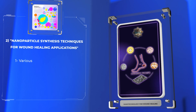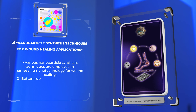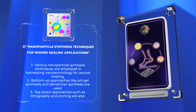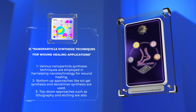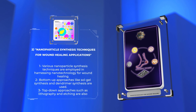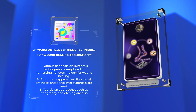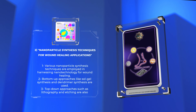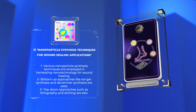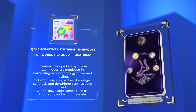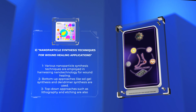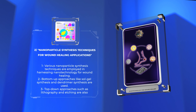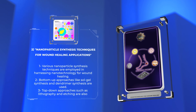To harness the potential of nanotechnology in wound healing, various nanoparticle synthesis techniques are employed. These techniques include bottom-up approaches like sol-gel synthesis, dendromer synthesis, and template synthesis, as well as top-down approaches such as lithography and etching. Each technique offers unique advantages and can be tailored to produce nanoparticles with specific characteristics suitable for wound healing applications.